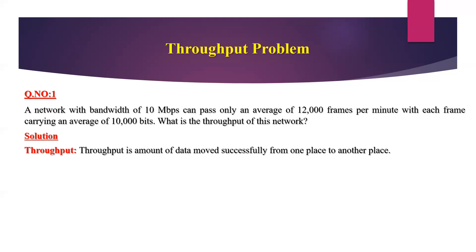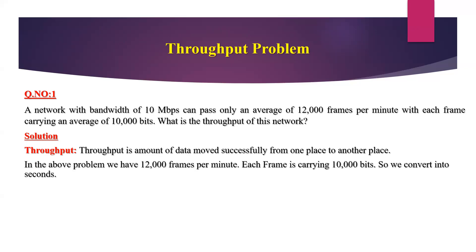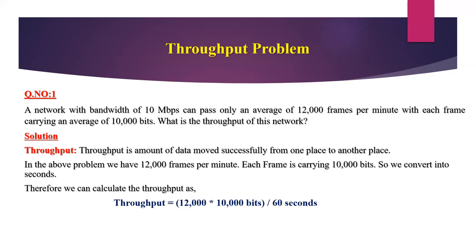Within the time limit, if you complete the task, then we can achieve the throughput. So throughput is the amount of data moved successfully from one place to another. In the above problem, we have 12,000 frames per minute, each frame carrying 10,000 bits. Converting to seconds, the throughput equals number of frames multiplied by number of bits: 12,000 × 10,000 divided by 60 seconds. Therefore, the throughput is 2 Mbps.